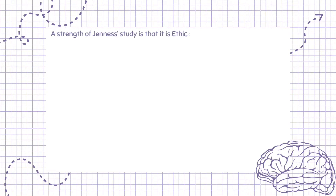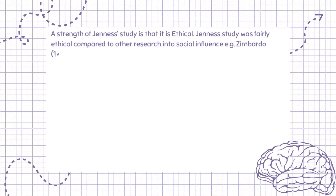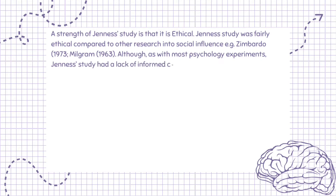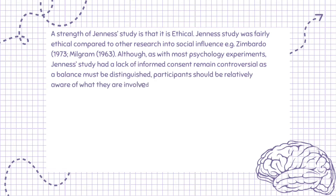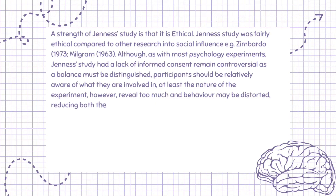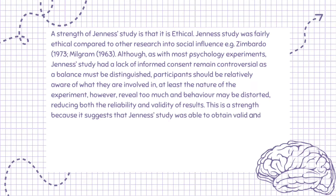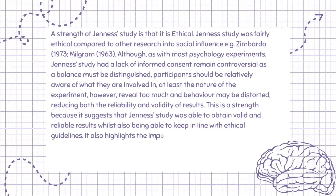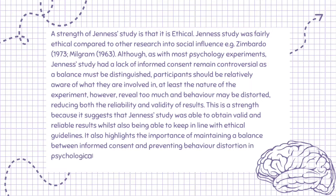A strength of Jeunesse's study is that it is ethical. Jeunesse's study was fairly ethical compared to other research into social influence, e.g. Zimbardo, 1973, and Milgram, 1963. Although, as with most psychology experiments, Jeunesse's study had a lack of informed consent, which remains controversial, as a balance must be distinguished — participants should be relatively aware of what they are involved in, at least the nature of the experiment. However, reveal too much and behavior may be distorted, reducing both the reliability and validity of results. This is a strength because it suggests that Jeunesse's study was able to obtain valid and reliable results whilst also keeping in line with ethical guidelines. It also highlights the importance of maintaining a balance between informed consent and preventing behavior distortion in psychological research, as this is crucial to obtain credible and trustworthy results.